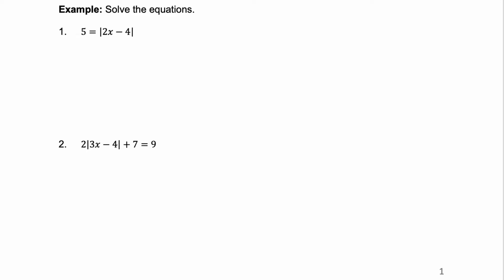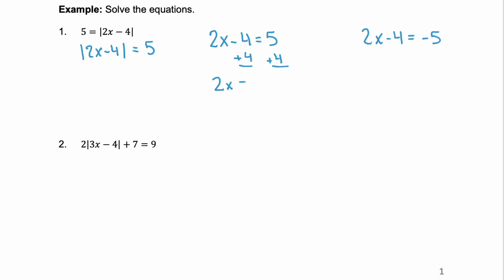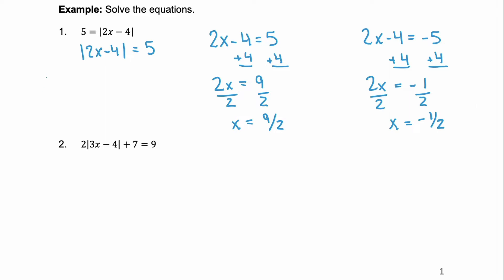Let's look at some other examples that are a little more involved. Notice that the absolute value is just on the opposite side. If that makes you uncomfortable, you can rewrite it as the absolute value of 2x minus 4 is equal to 5. Either way, you're going to solve 2x minus 4 is equal to positive 5, and 2x minus 4 is equal to negative 5. For the first, add 4 to both sides, and we have 2x is equal to 9. Divide by 2, and we get x equals 9 halves. For the second, add 4 to both sides, and we have 2x equals negative 1. Divide by 2, and you have x equals negative 1 half. So, our solution here is 9 halves or negative 1 half.